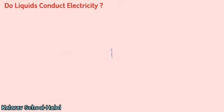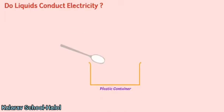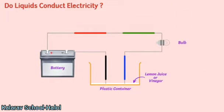Let's perform another activity using the tester. Take a plastic or a rubber container and add one teaspoon of lemon juice or vinegar. Dip the two free ends of the tester into the liquid such that the two free ends are about one centimeter apart. Does the bulb glow? What does this mean? Is the liquid a good conductor or a bad conductor?